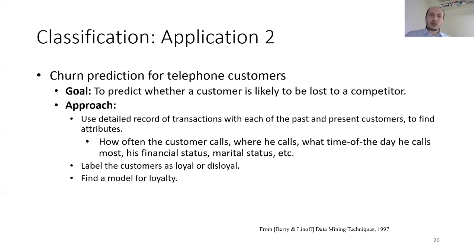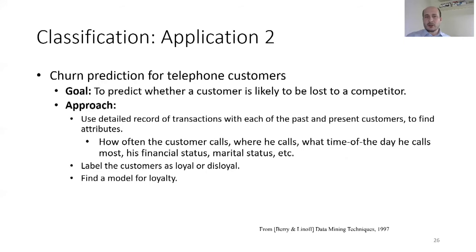The second application is churn prediction for telephone customers. The goal is to predict whether a customer is likely to be lost to a competitor. The approach uses detailed records of transactions — how often the customer calls, where they call, what time of day, their financial and marital status, etc. Customers are labeled as loyal or disloyal, and we find a model for loyalty.